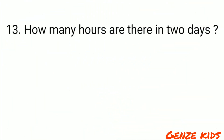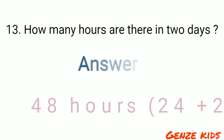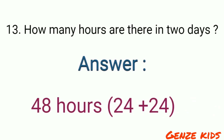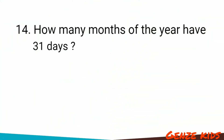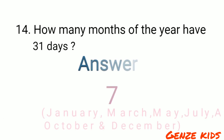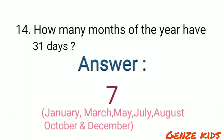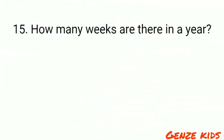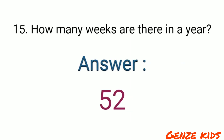How many hours are there in two days? Forty-eight hours. How many months of the year have 31 days? Seven months. How many weeks are there in a year? 52 weeks.